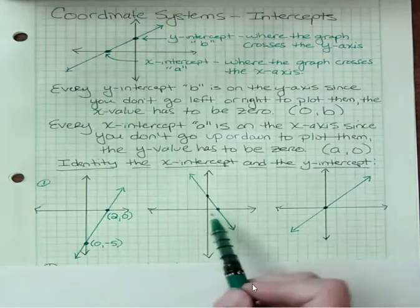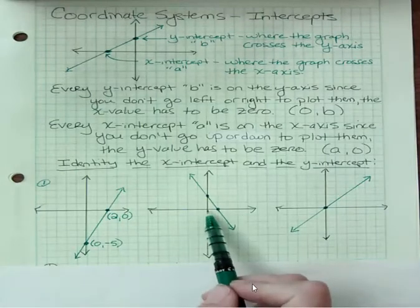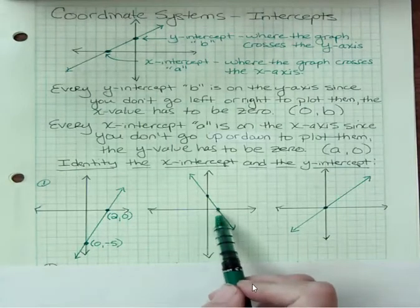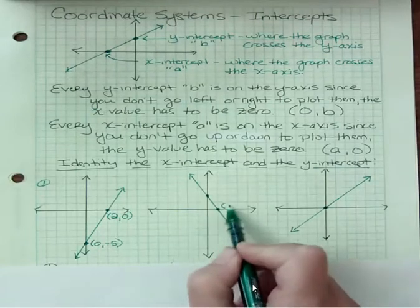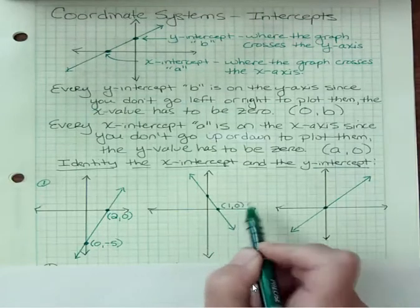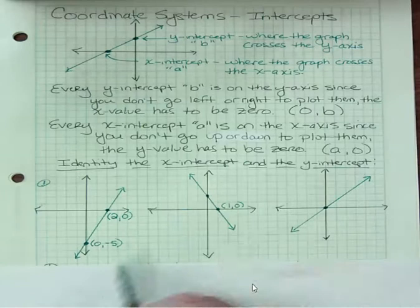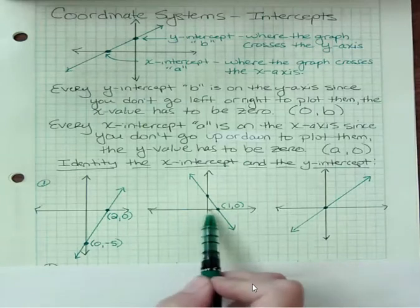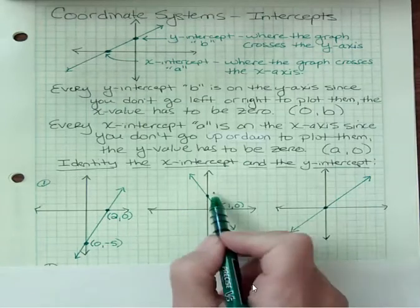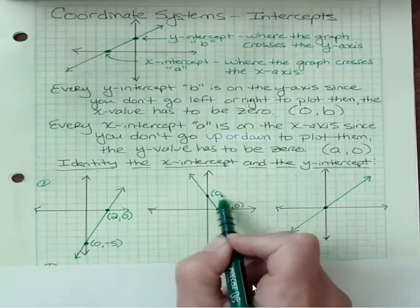What's the x-intercept for this one? Well, you're going to go one over, and then you don't go up or down. So it's one, zero. Notice all of our x-intercepts have a zero in the y-place. What would be the y-intercept here? Well, don't go left or right, but go up two. So we have zero, two.